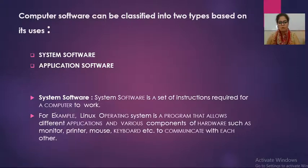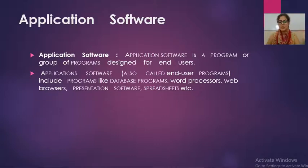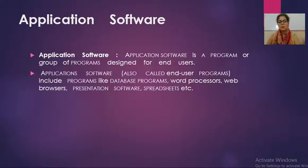The second type of software is application software. As the name is application, application software is required to run some specific application, or we can say application softwares are designed to solve some specific problem of a user. All the applications that we use in our daily life come under application software. Application software is a program or group of programs which are specifically designed for end user.